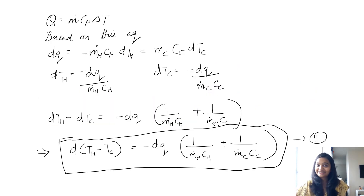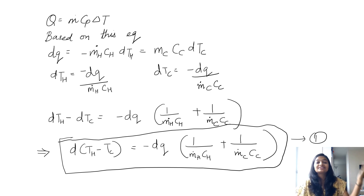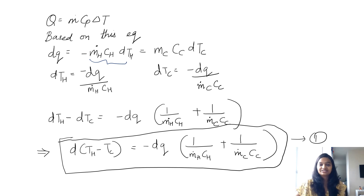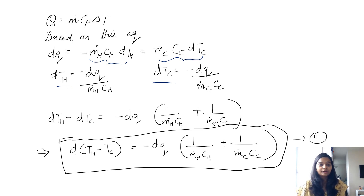Talking about the equation, we know that Q is equal to MC delta T, that is the sensible heat. At each point the Q remains constant, meaning there is steady heat transfer. Based on that, within the hot fluid we can write Q upon MH CH, and in the cold fluid we can write Q upon MC CC. Since heat flow is constant, we write delta TH and delta TC in this particular form.